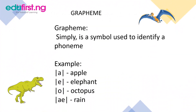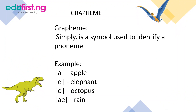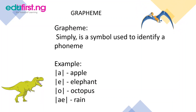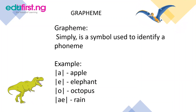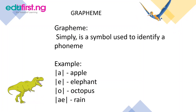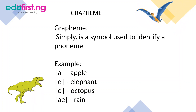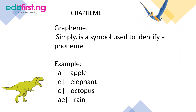Graphemes. What is a grapheme? A grapheme is simply a symbol used to identify a phoneme. For example, we have the /a/ sound for apple. The /a/ sound is a phoneme, while apple is a grapheme, which means a word.